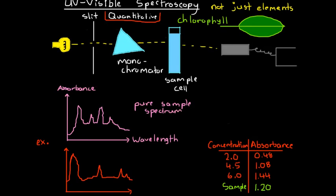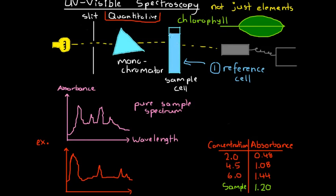The cell in the instrument is the one we change throughout the process. To start with, we put in a reference cell. We're using a glass or transparent cell to contain our solutions. The first step is to put a glass container of just the solvent we're using — if we're dissolving our chlorophyll sample in water, we put a cell containing just water in here and measure the absorbance at our chosen frequency.